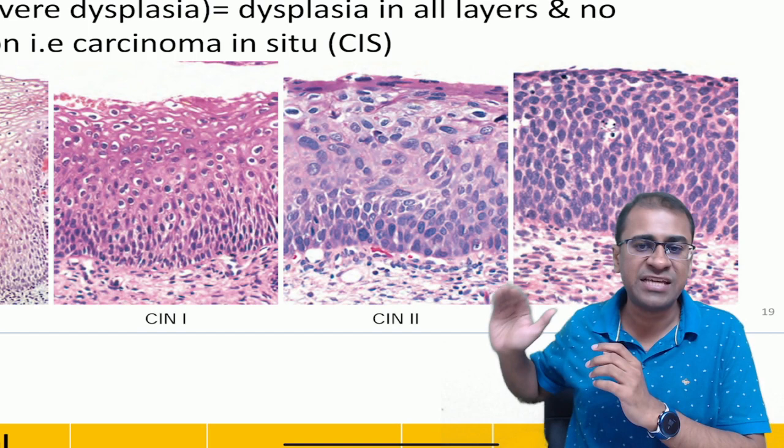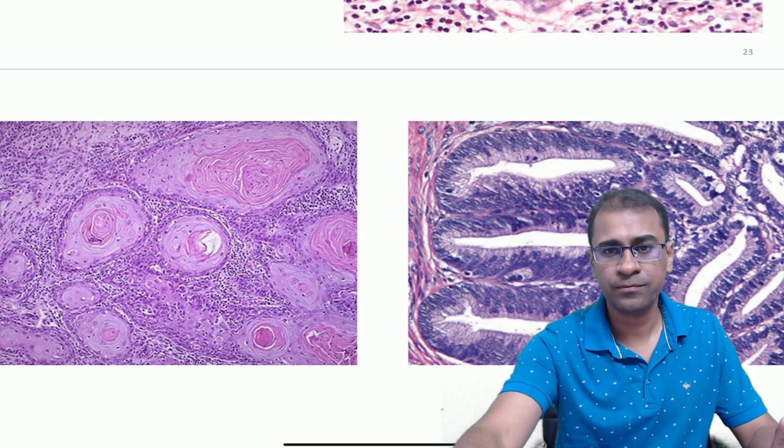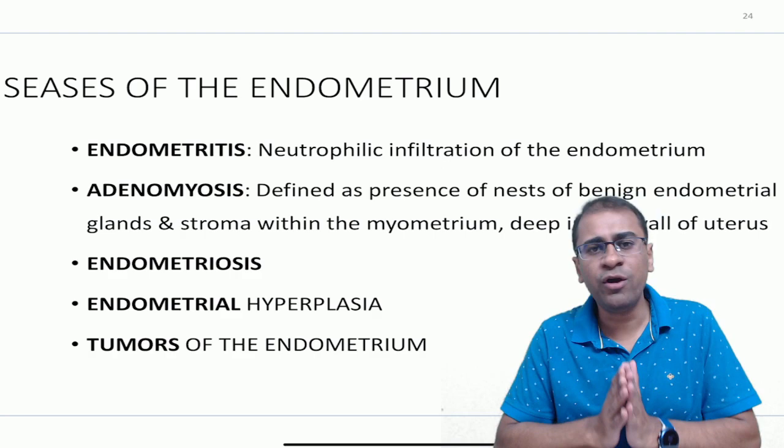A gynecologist will take no action for CIN 1 and will wait and watch. For CIN 2 and CIN 3, he will take some actions — for example, he will do laser therapy, conization, or he will do the actual treatment by removing the involved part of the cervix. A cervix can show carcinomas like squamous cell carcinoma and adenocarcinoma with glands, this one showing you keratin pearls.